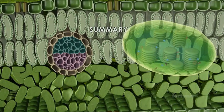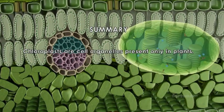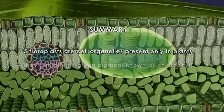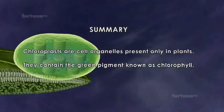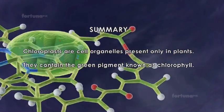In summary, chloroplasts are cell organelles present only in plants. They contain the green pigment known as chlorophyll and are the sites of photosynthesis.